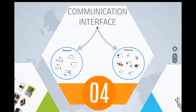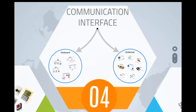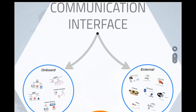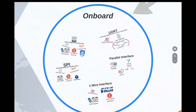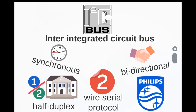Let us dive into communication interfaces. A communication interface is essential for communicating with various subsystems of the embedded system and with the external world. It can be divided into two major sections: device or board-level communication interfacing, that is onboard communication interface, and product-level communication interface, that is external communication interface. Serial interfaces like I2C, SPI, UART, one-wire, and parallel bus interfaces are examples of onboard communication interfaces, whereas infrared, Bluetooth, wireless LAN, RF waves, and GPRS are examples of external interfaces.